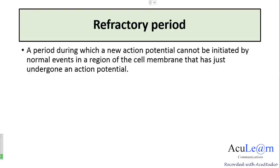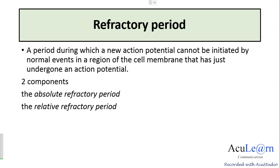The refractory period is defined as a period during which a new action potential cannot be generated or initiated by normal events in a region of the cell membrane which has just undergone an action potential. In other words, following an action potential, the cell membrane does not respond to the next stimulus — that is, the cell membrane is refractory to the next stimulus. It is of two types: the absolute refractory period and the relative refractory period.